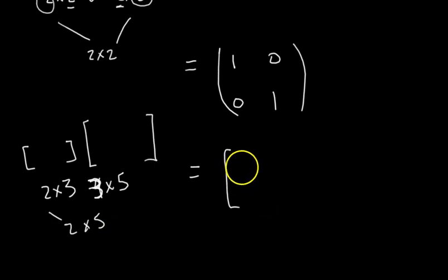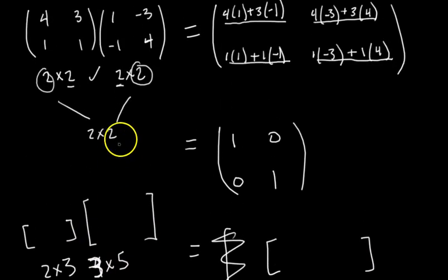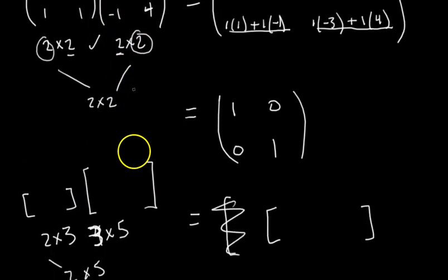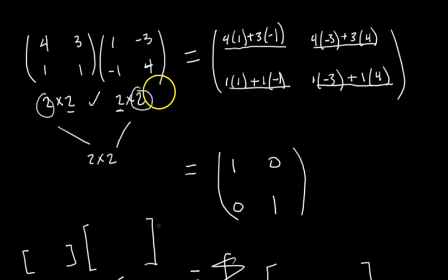The product matrix would be 2 by 5. It's the outer dimensions. It would be 2 by 5, so it would be like a long and skinny matrix. Just want to make sure that's clear because once you have different dimensions, you really do have to check, is it defined? And then what's the dimension of your product matrix?